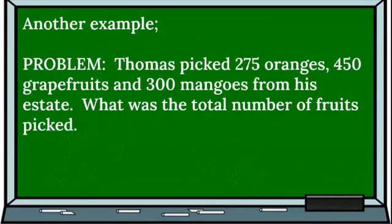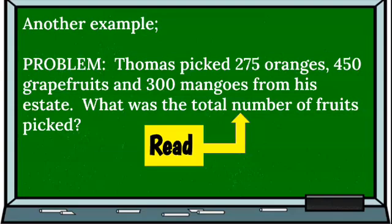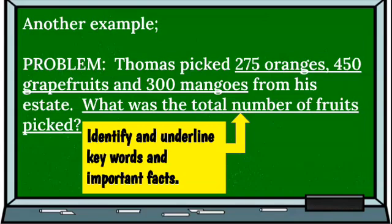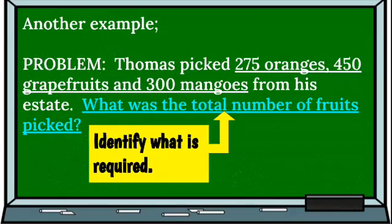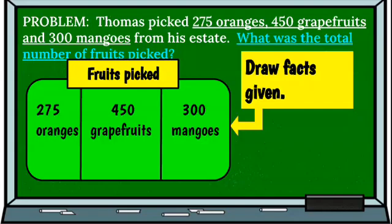Now let's try another example. Thomas picked 275 oranges, 450 grapefruits, and 300 mangoes from his estate. What was the total number of fruits picked? We identify and underline keywords and important facts — remember the information given, what we are required to find, and so on. We identified what is required: what was the total number of fruits picked? Now let's draw our facts given.